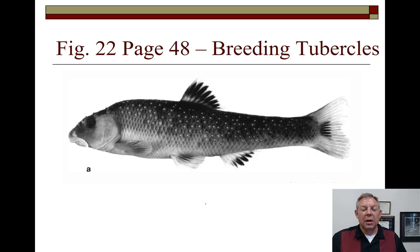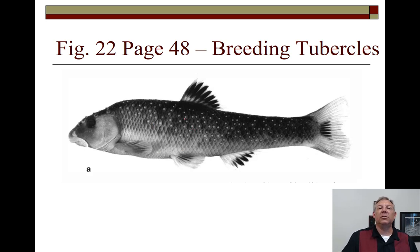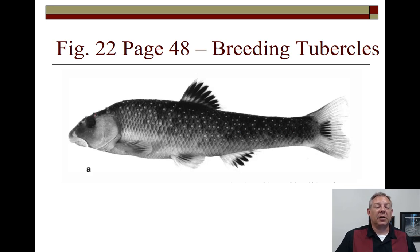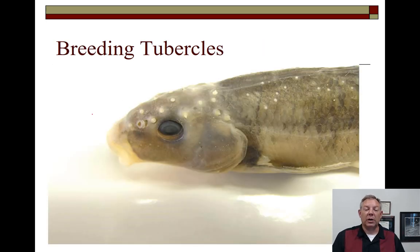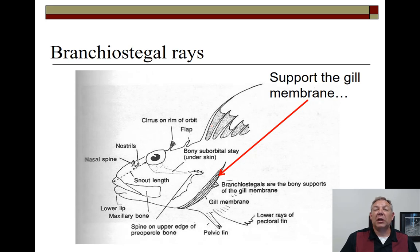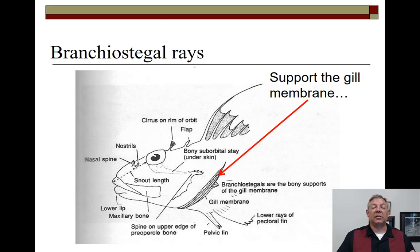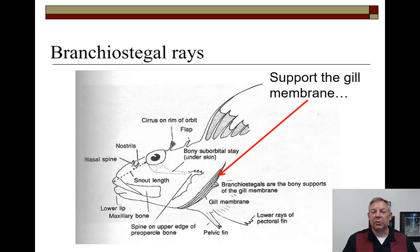These hard pimples all over a fish's body are called breeding tubercles, which usually show up during the breeding season, usually on males, and can be a diagnostic characteristic. This looks like a stoneroller — the number of tubercles on the head is a diagnostic characteristic, and they're very hard nodules. The branchiostegal membrane is like a fin membrane supported by rays, called branchiostegal rays. Sometimes we count the number of those to help identify fish, like in the Esocidae.